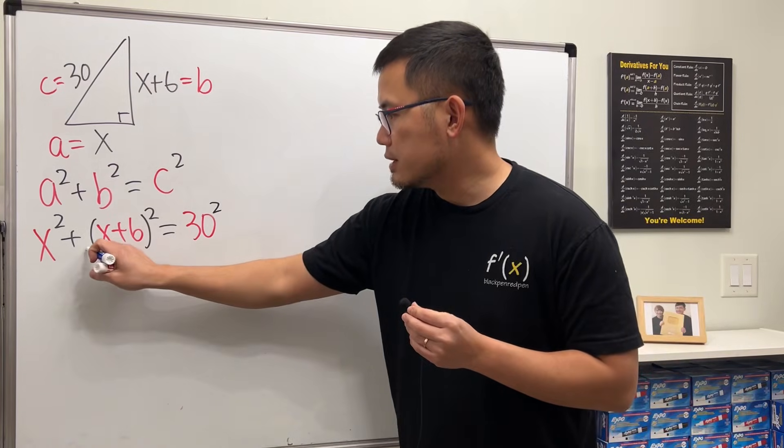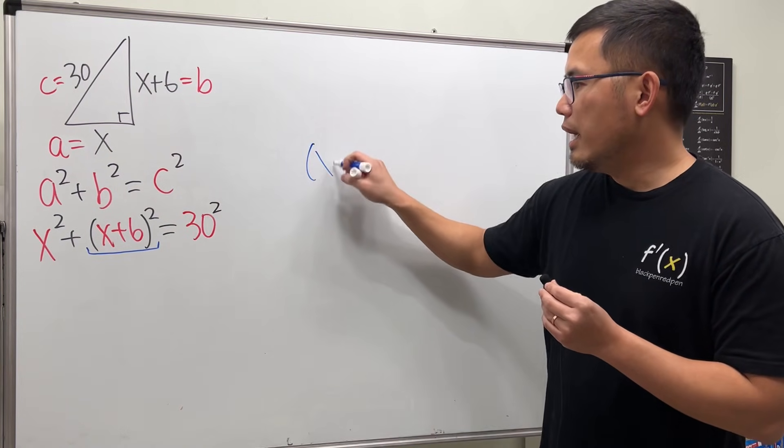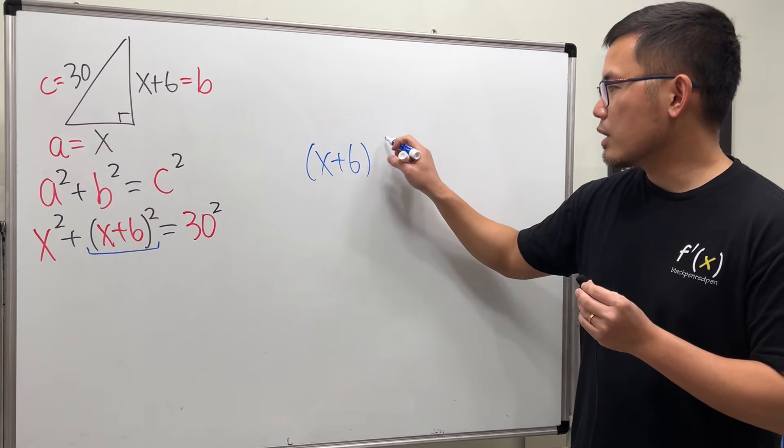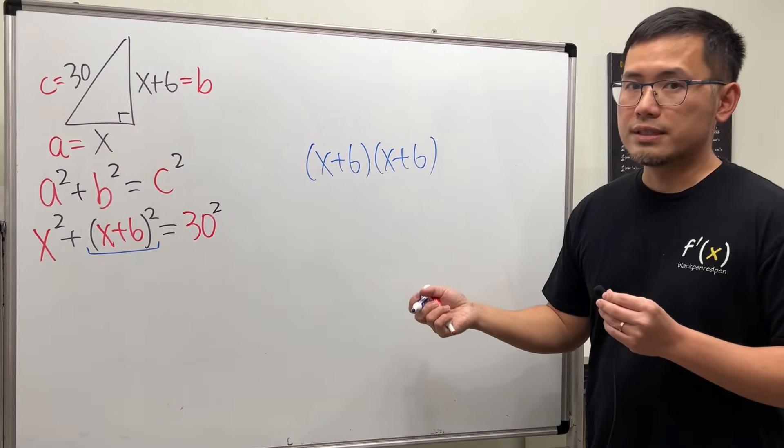Check this out. First, let's just multiply this out. Right here, (x + 6)². Write it down twice, and then we're just going to FOIL this out.